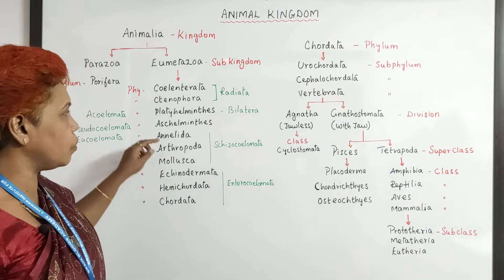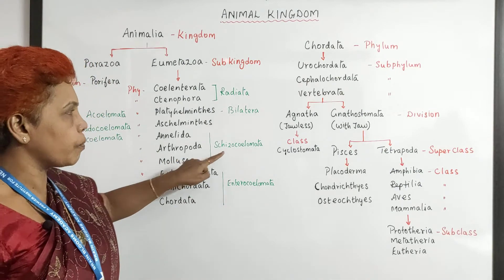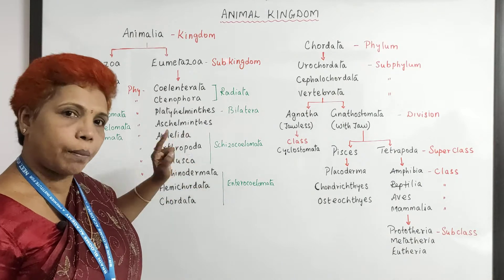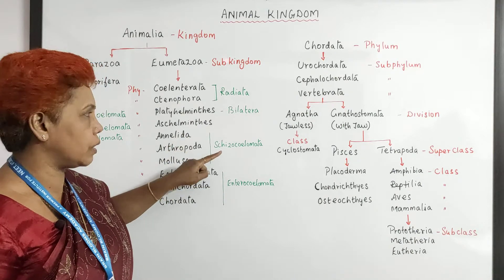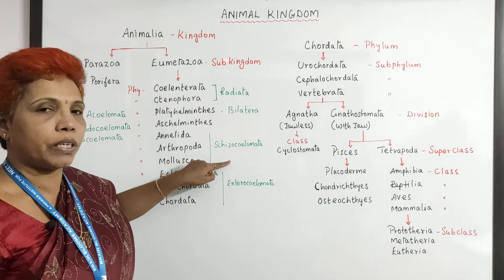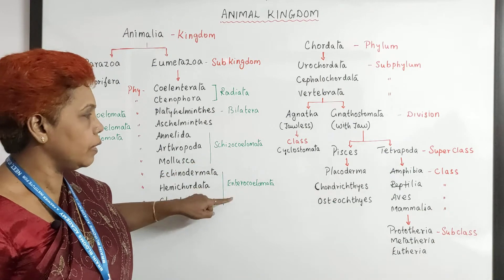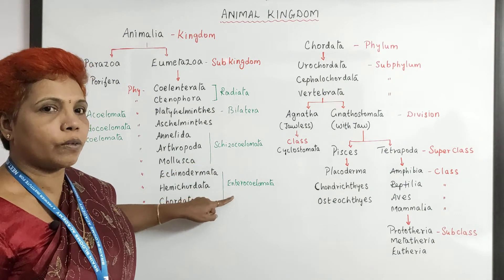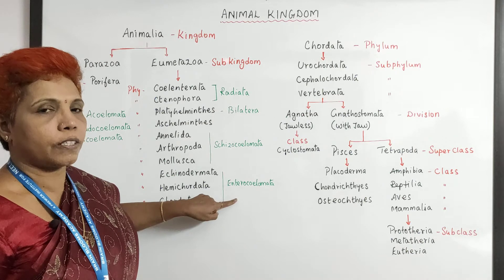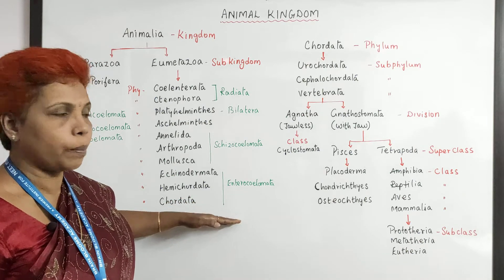From here, Annelida, Arthropoda, and Mollusca are schizocoelous — meaning in embryonic origin, the mouth develops first from the blastopore. In enterocoelomates, the anus develops first from the blastopore. So enterocoelomates are considered more advanced.